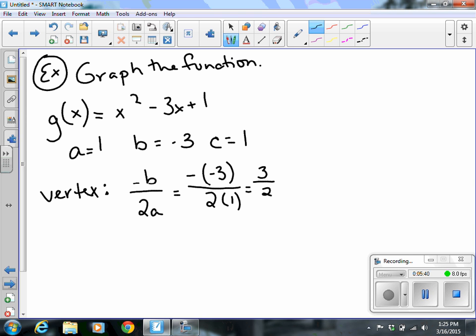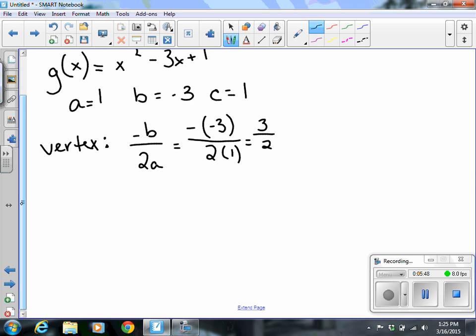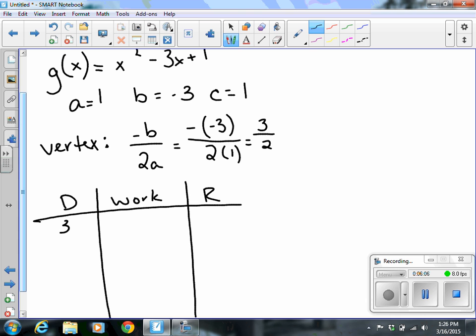So what is that? I can't plot 3 over 2. That's just my x coordinate. So in order to figure out the other points, you need to make a t chart or an h chart. And we had talked about this before, where we plug in our domain, our work, and then we'll find our range. For sure, I am going to have 3 halves, because I need to know where that vertex is at.